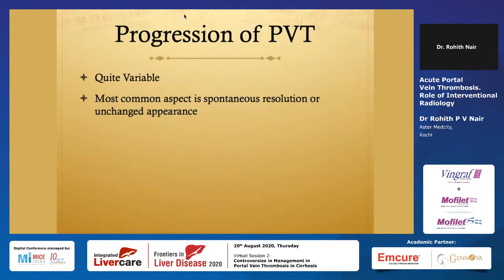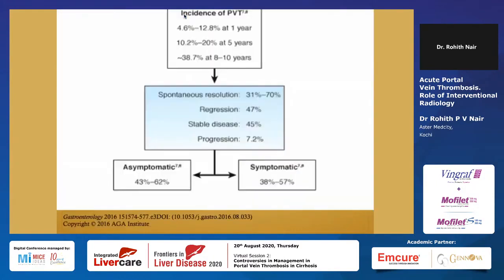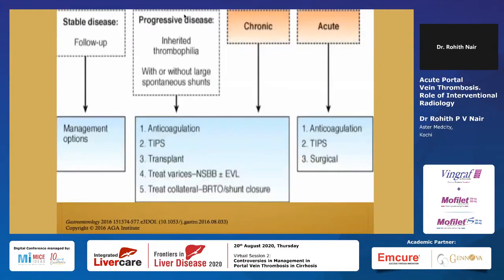Regarding progression of PVT, if a hepatologist or gastroenterologist in the transplant team asks what's going to happen, most patients have spontaneous resolution or unchanged appearance. A paper published in Gastroenterology in 2016 showed spontaneous resolution in nearly 70% and progression in only about 7%. So even if I don't do anything, most patients will spontaneously resolve — that's the first thing in my mind.